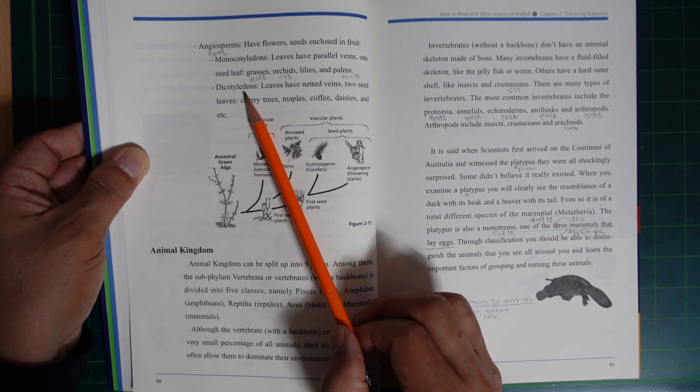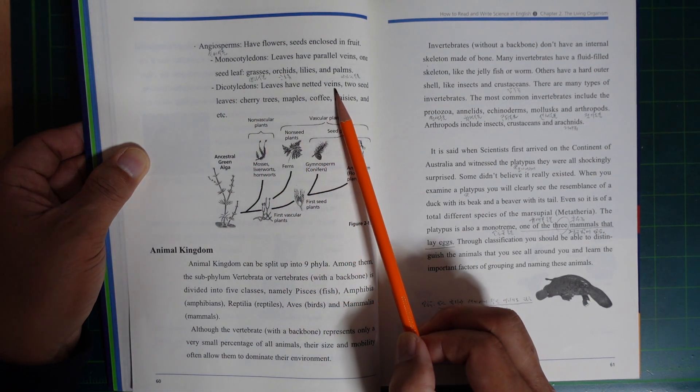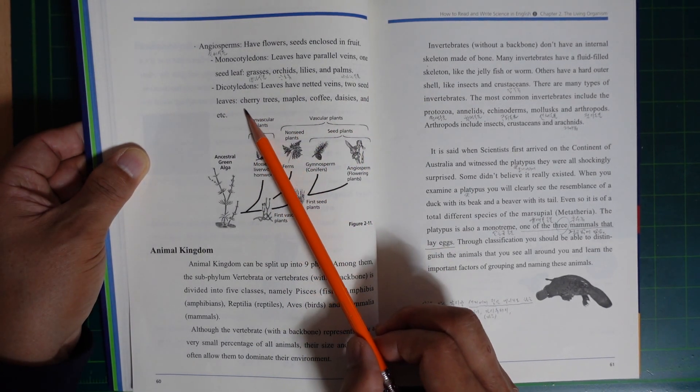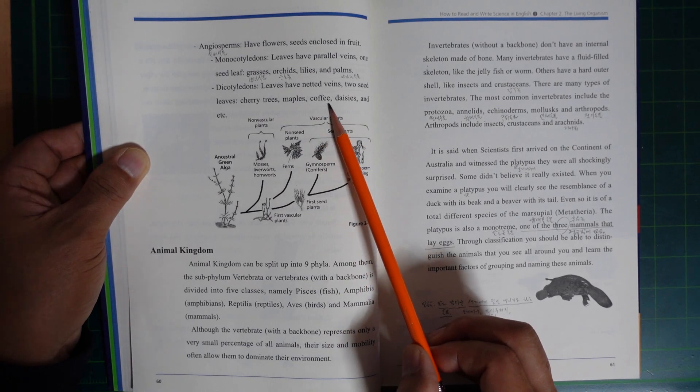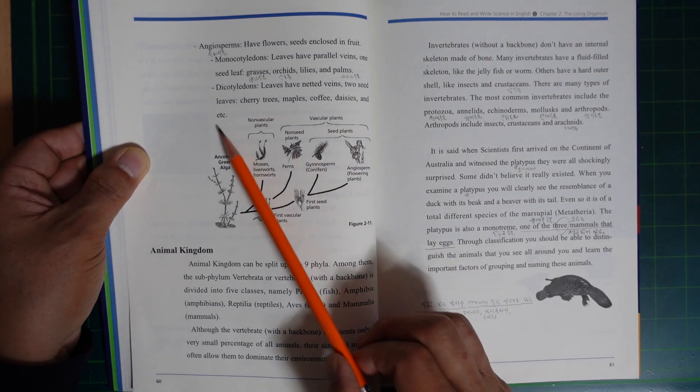Dicotyledons: leaves have netted veins, two seed leaves. Examples include cherry trees, maple, coffee, daisy, and others.